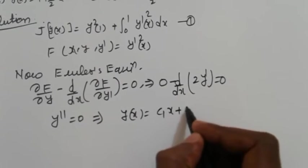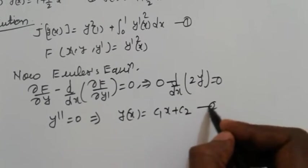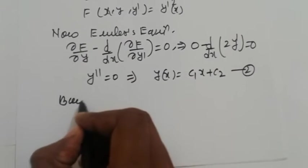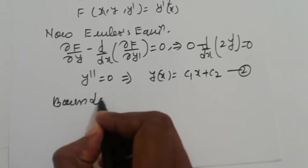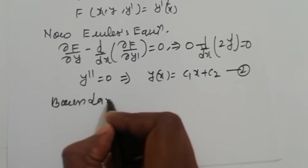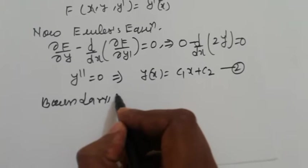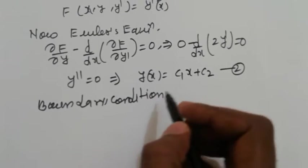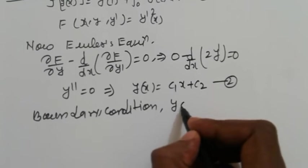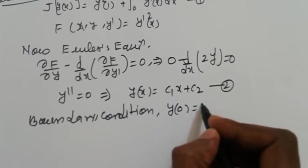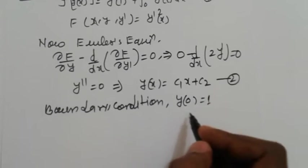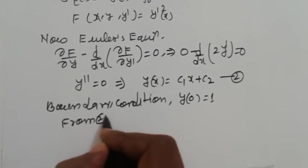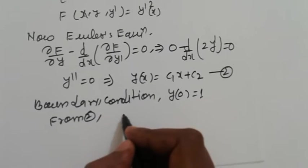This is equation number 2. Now apply the boundary conditions. Boundary conditions: y(0) = 1 is given.